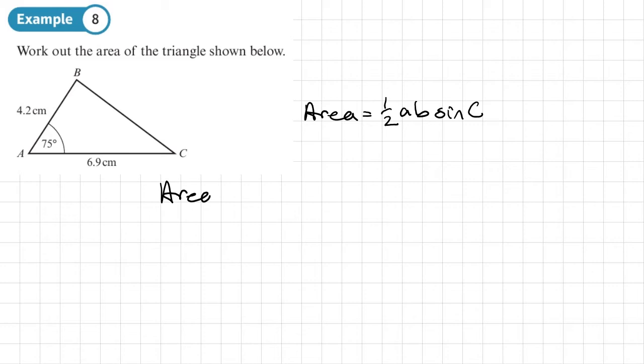So the area is going to be half times A. So that can be the 4.2 or the 6.9 times B. Again, that can be the 6.9 or 4.2 times the sine of the angle between them, which is 75 degrees.